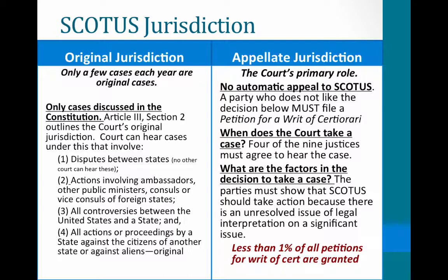Everything else starts at the district court level. The court's primary role — 99% of what they do — is deciding whether to hear and then hearing appellate jurisdiction cases. There is no automatic appeal to the Supreme Court. If you receive a decision you don't like at the circuit court level, you must apply for a petition for a writ of certiorari. The court must grant it and docket your case, and less than 1% of cases make it through this process.